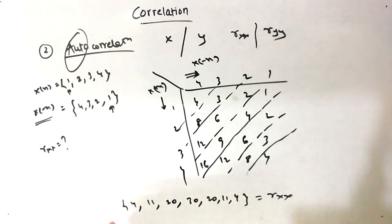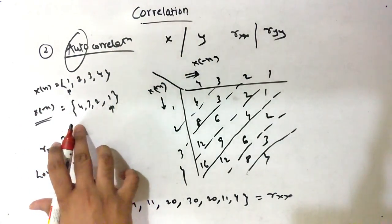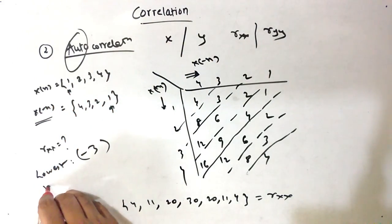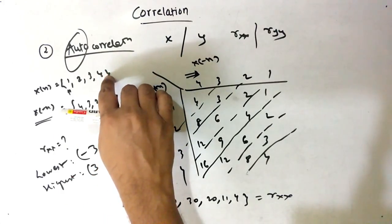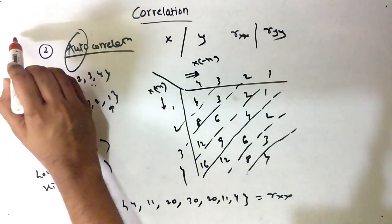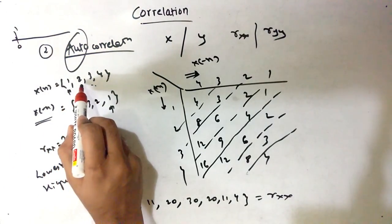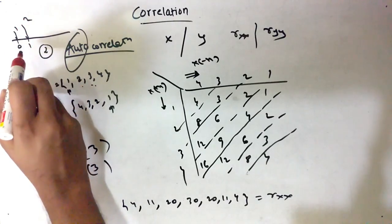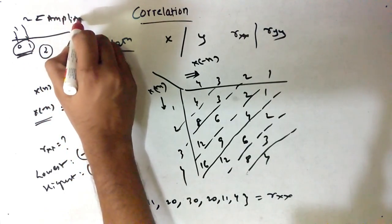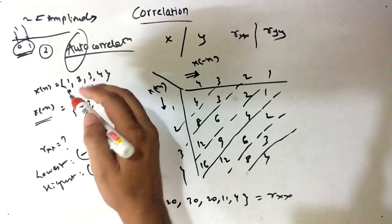Now we need to find the lowest and highest axis values. The lowest, starting from 0 going left: minus 1, minus 2, minus 3 — so lowest is minus 3. The highest, going right: 1, 2, 3 — so highest is 3. Don't get confused: these axis values are the X-coordinates, whereas the computed values like 4, 11, 20, 30 are the amplitudes — the Y-coordinates. So we plot from minus 3 to 3, with the peak value of 30 at index 0.